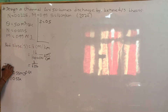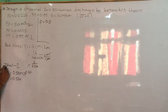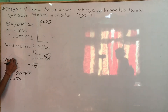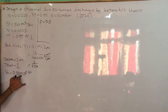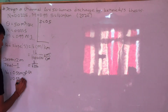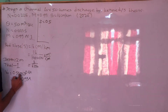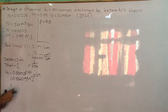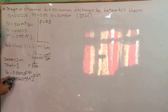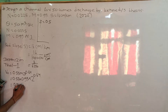Trial method: 1st trial, assume depth = 2 m. Critical velocity = 0.55 into 0.99 into depth to the power 0.64 = 0.55 × 0.99 × 2^0.64 = 0.848 m.